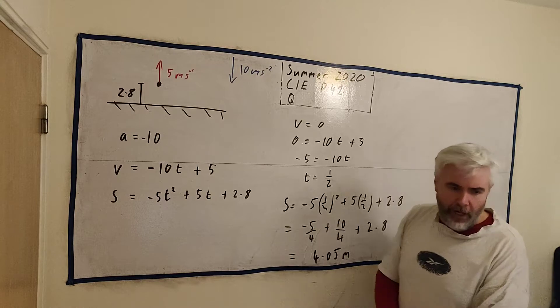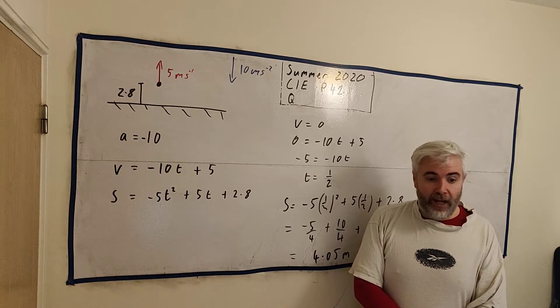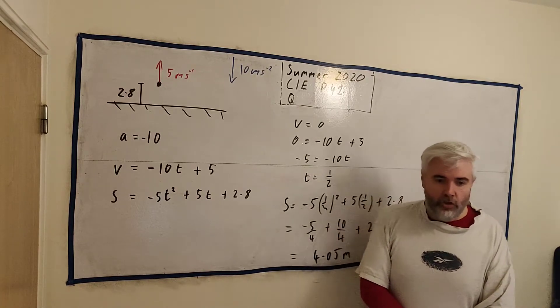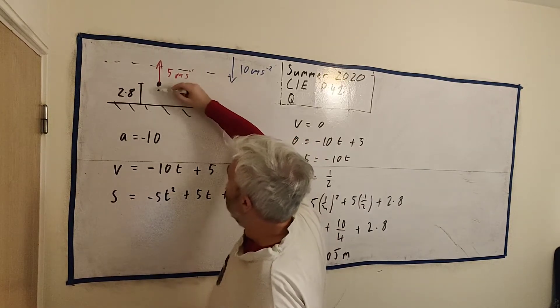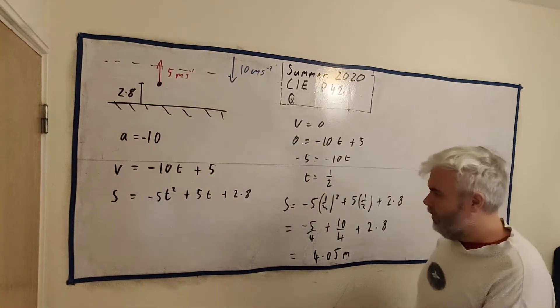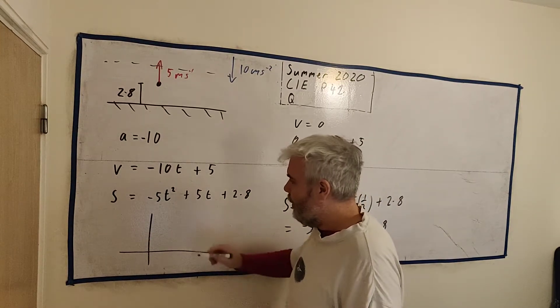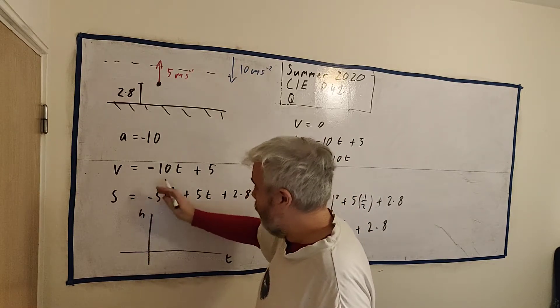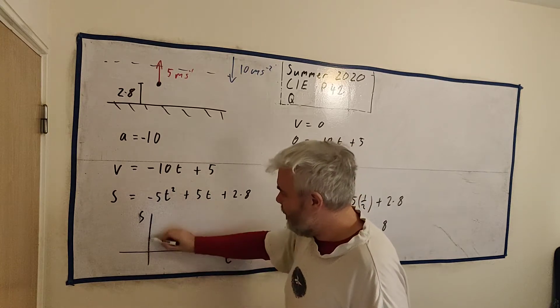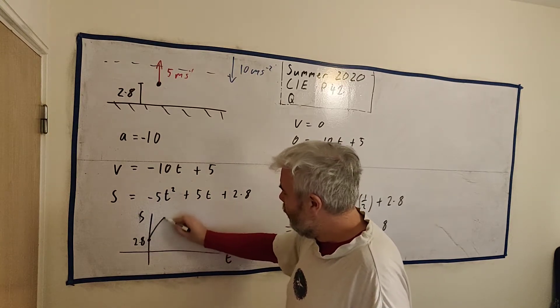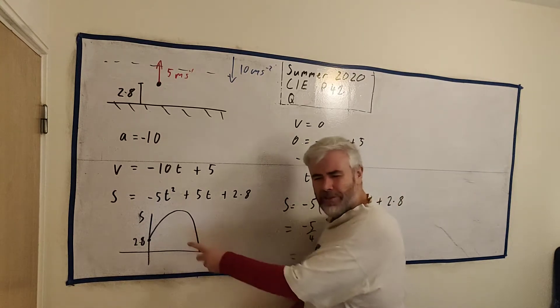Now let's do part B. Part B asks us to find the length of time for which P is at a height of more than 3.6 meters. So somewhere up more than this, so it goes up and comes back down. Let's draw a quick little graph of that. We'll draw displacement versus time. It starts at 2.8 and goes up something like this and then hits the ground.